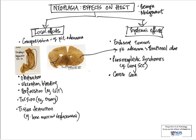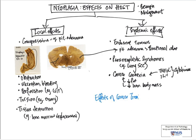Cancer cachexia is a phenomenon in which patients suffering from cancer, often advanced disease, have marked reduction in body fat as well as marked reduction in lean body mass. This is usually very obvious when you see the patient — the patient is extremely thin. These effects are often mediated by systemic substances including tumor necrosis factor alpha as well as interleukin-1, which are cytokines.